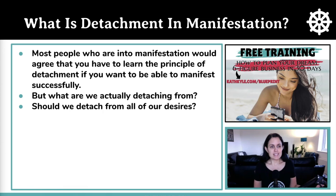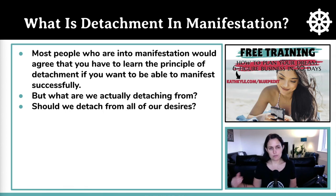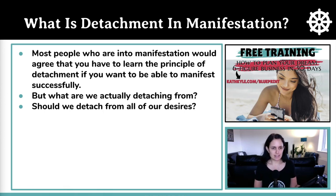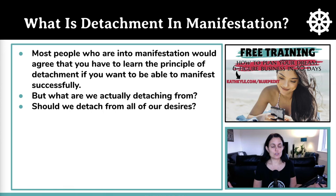I'm going to share my take on what detachment means in manifestation. Most people agree you have to learn the principle of detachment to manifest successfully, but what are we actually detaching from? A lot of people talk about detaching from your desires — letting go so you don't feel desperate — and some say you can detach by thinking of a plan B, being totally okay with something else happening instead. But I really struggled with this idea for a long time.